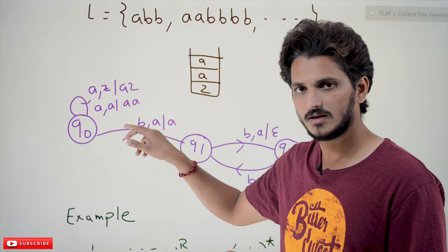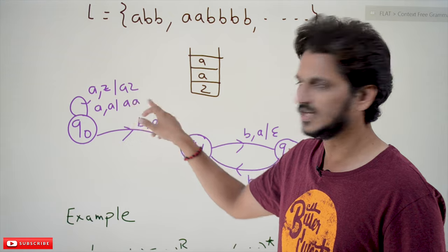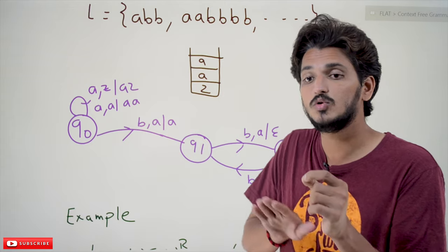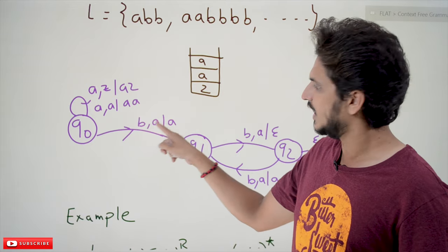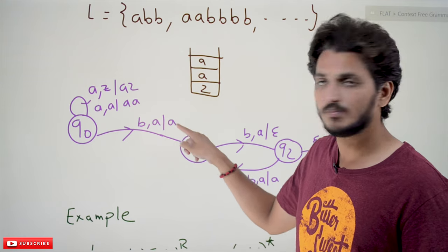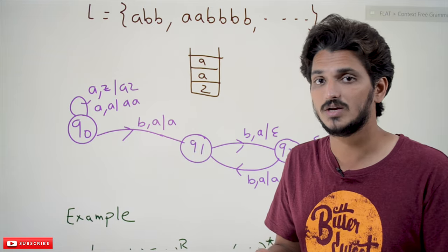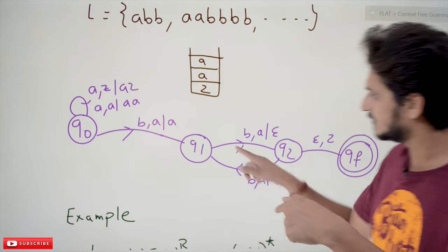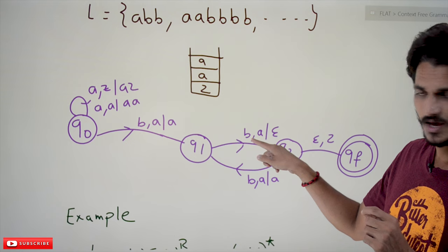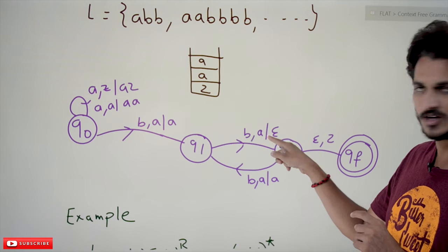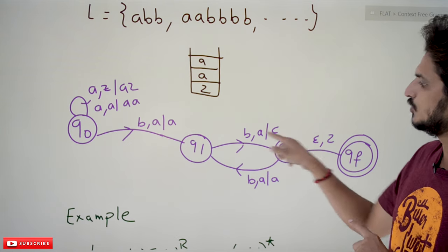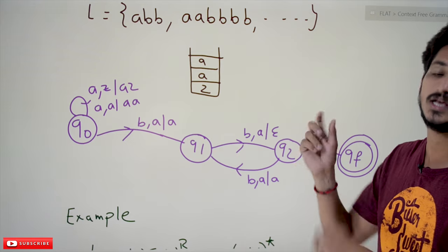If the input symbol is 'a' and the stack top is 'a', push 'a' onto the stack — that's the push operation, giving 'aa' on top. Whenever you see 'b' we have to take one step: if the input symbol is 'b' and the stack top is 'a', no operation — we are not doing any pop yet because we have only seen the first 'b'. That's why the stack top symbol remains 'a'. We move to q1 and wait for one more 'b'.